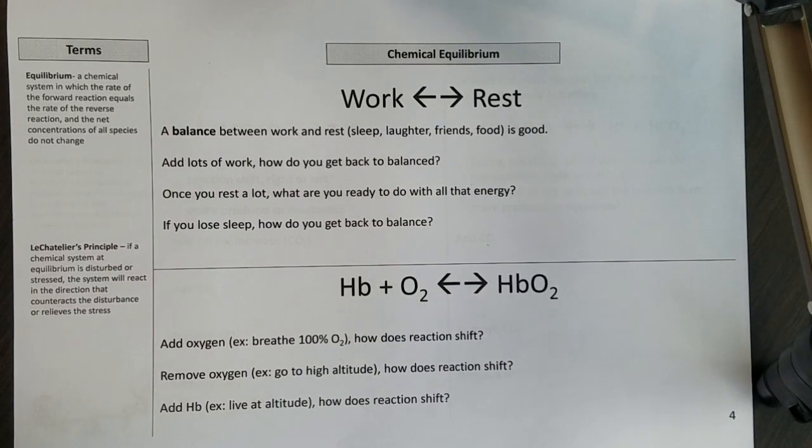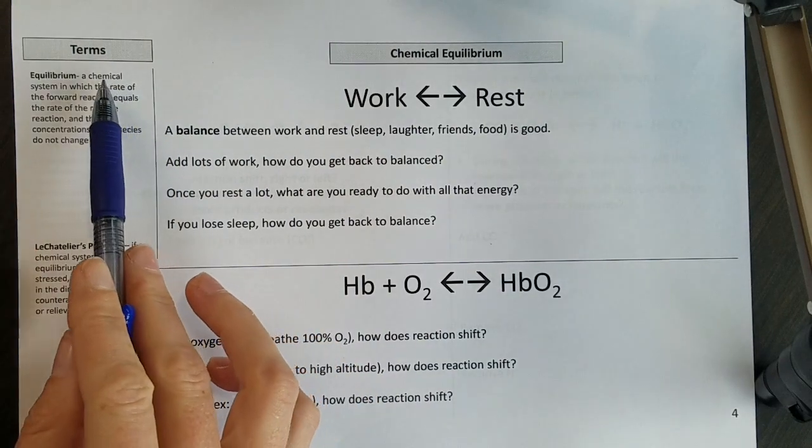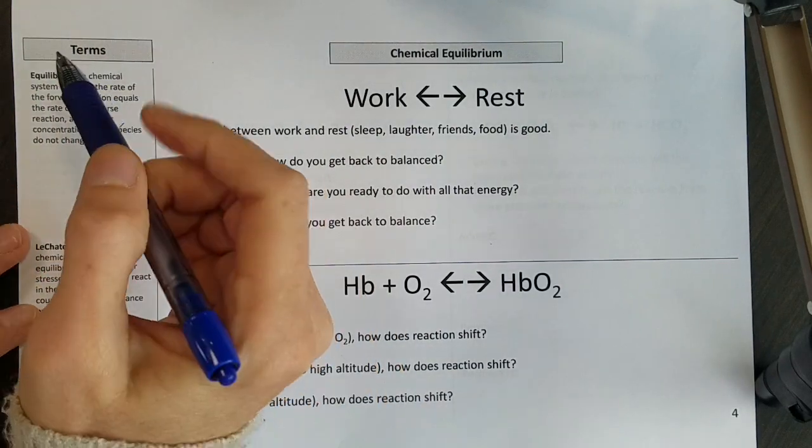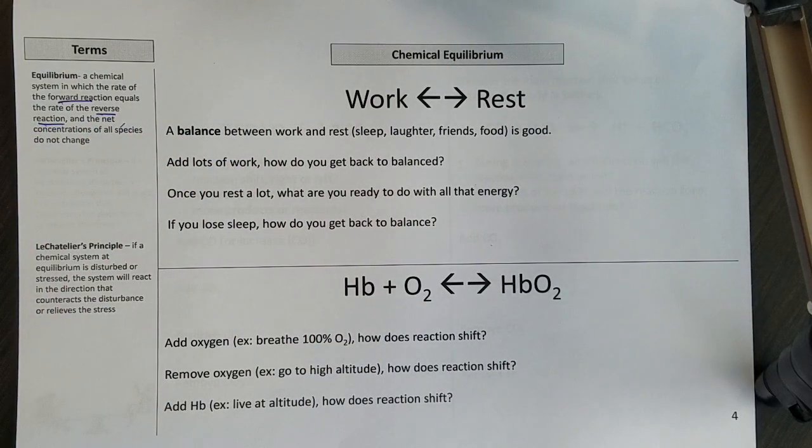We're going to take a look at chemical equilibrium. Equilibrium is a chemical system in which the rate of the forward reaction equals the rate of the reverse reaction, and the net concentrations of all species do not change.